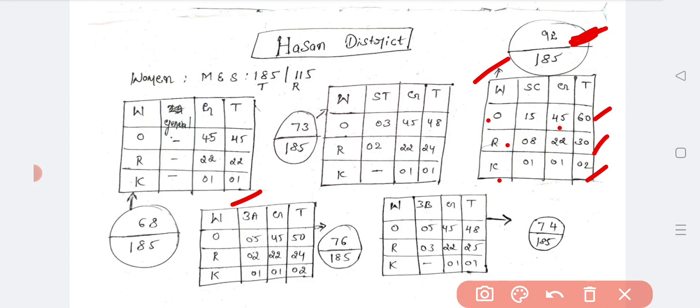3A: others 3A 5, general 45, total 50. Rural 2 plus 22, 24. Kannada medium 1 plus 1, 2. So totally 76 seats are reserved for 3A category, that is Kannada medium and rural.